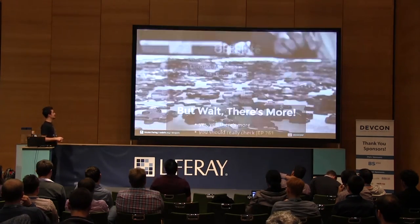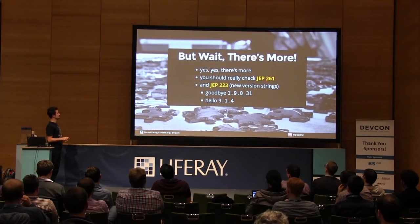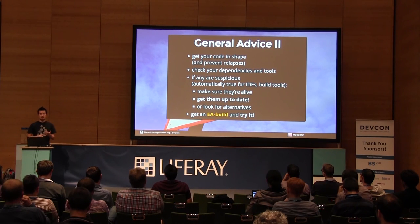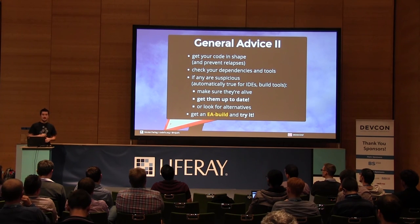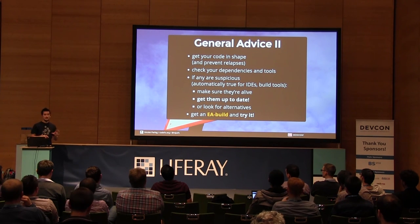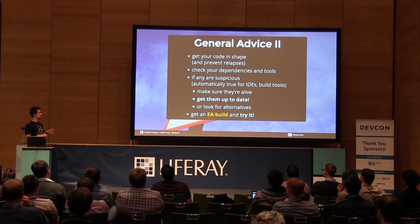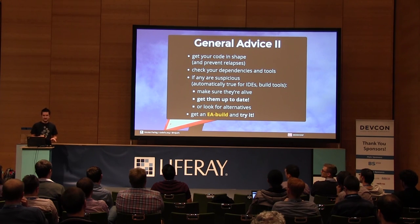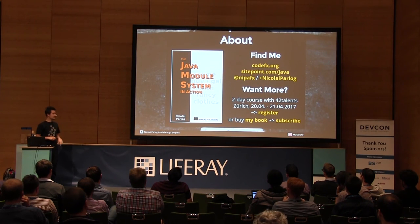For more arcane things that can go wrong, take a look at JEP 261 which contains a full list. My general advice: look for internal API usage and split packages, as those are the most likely issues. Get your code in shape and prevent relapses by integrating checks into your build. Very importantly, check your dependencies and tools — if any are suspicious, work on replacing or updating them. Get everything you depend on up to date now. If Guava 14 breaks and Guava 21 doesn't, being stuck on 14 is not helpful.